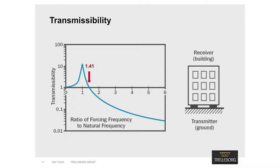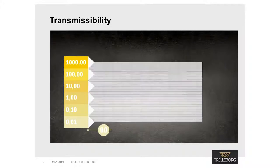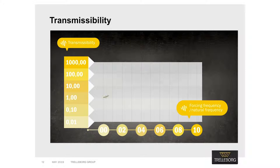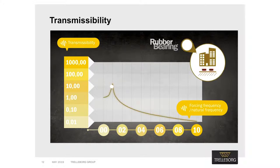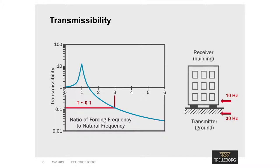To achieve isolation, the transmissibility value must be less than 1, which occurs at a frequency ratio of 1.41, the square root of 2. If the frequency ratio is less than 1.41, the bearing will amplify the ground vibration through to the building, which is clearly highly undesirable. The peak transmissibility response occurs when the natural frequency equals the dominant disturbing vibration frequency. It is therefore desirable to increase the frequency ratio well beyond 1.41. As an example, if the ground's dominant forcing frequency is 30 Hz and the natural frequency of the bearing is 10 Hz, giving a frequency ratio of 3, the transmissibility will be about 0.1, meaning the ground vibration amplitude will be reduced by about 90%.